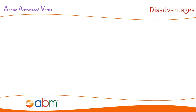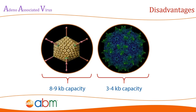Although AAV presents many advantages, its use is not without some disadvantages. Its major drawback is its very small genome size — in comparison to adenovirus, AAV is 5 to 10 times smaller. This greatly restricts the size of the gene that can be inserted into the AAV viral vector, as the transgene itself can only be less than 4.5 kilobases in length.